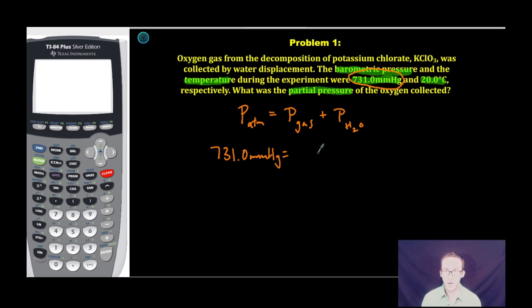We want to know what the partial pressure of the gas is, in this case, oxygen gas at 20 degrees Celsius. I don't know what to do. How can I have two missing variables? Fear not.